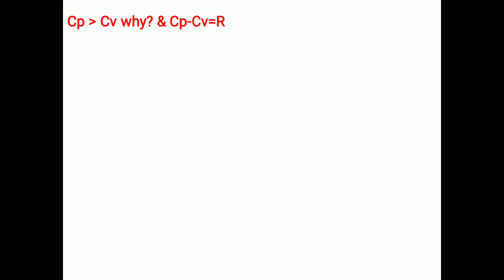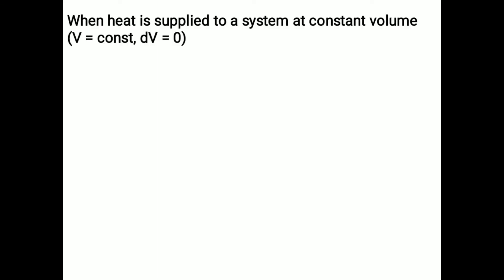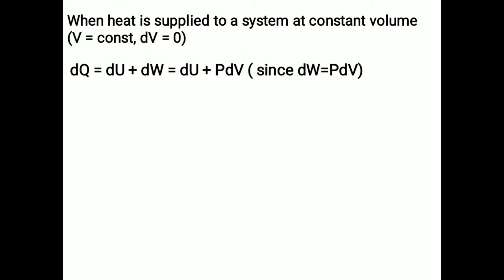Let us learn why Cp is greater than Cv and the derivation of Cp minus Cv equals R. When heat is supplied to a system at constant volume, that is v equals constant, then dv equals zero. According to the first law of thermodynamics, dq equals du plus dw, which equals du plus p·dv, since dw equals p·dv.